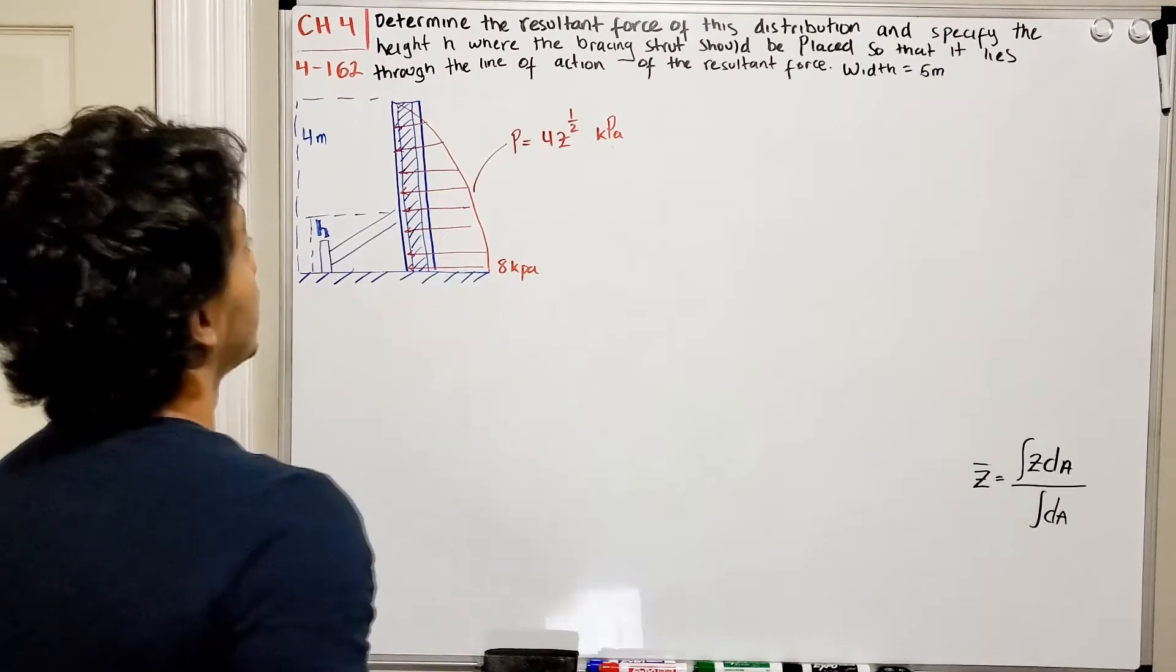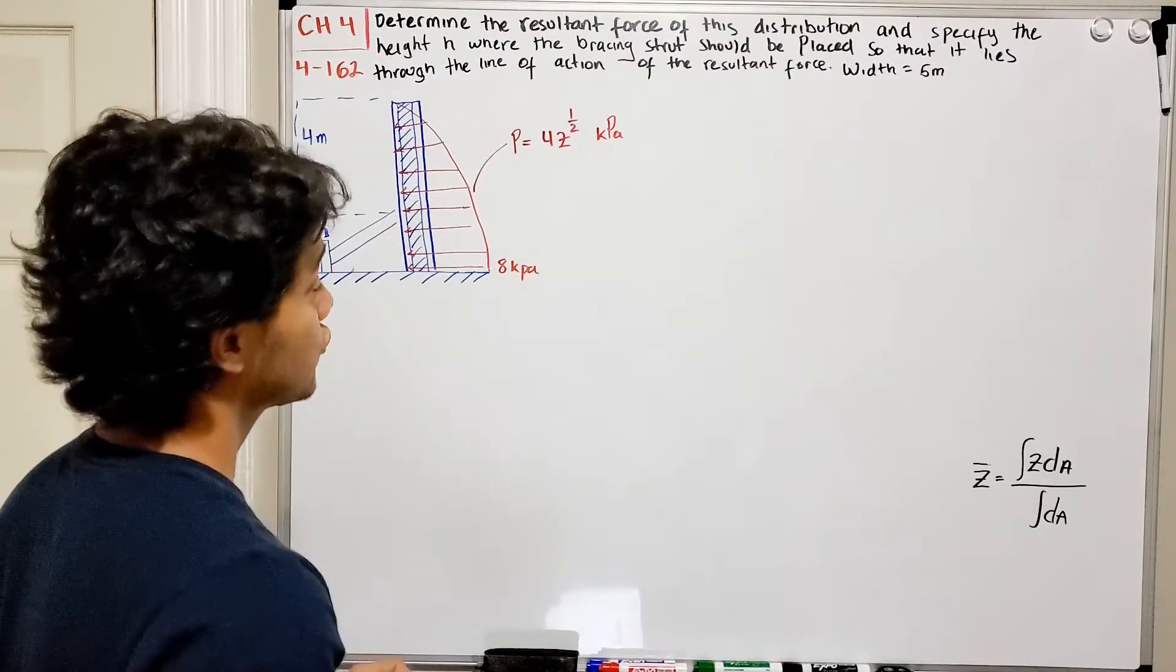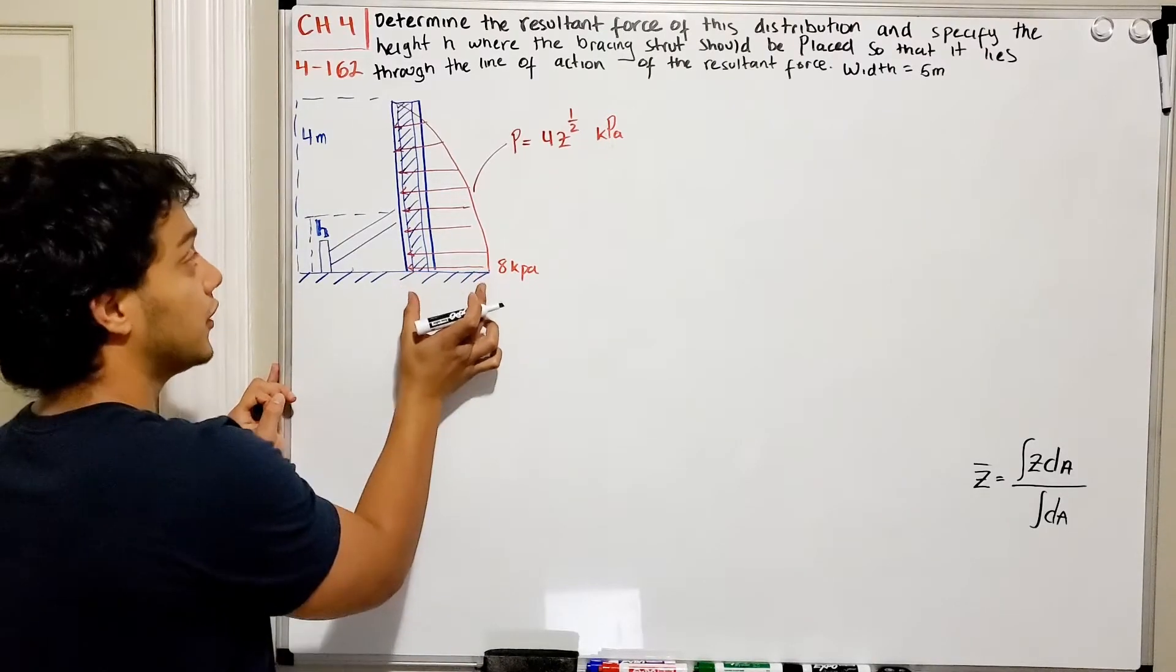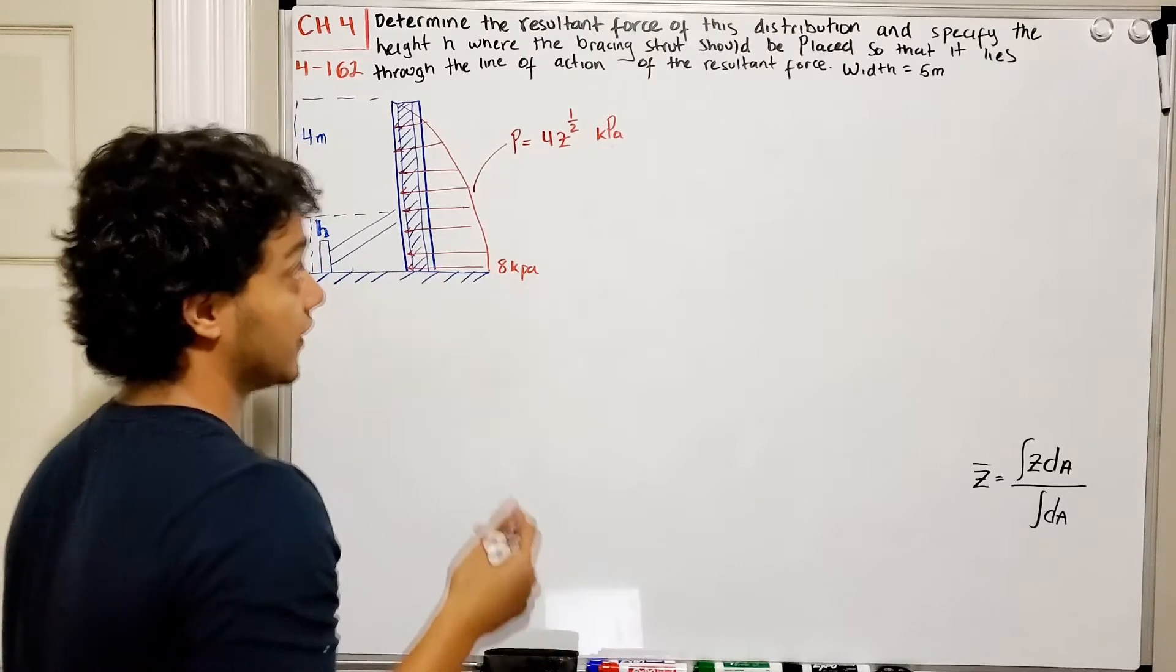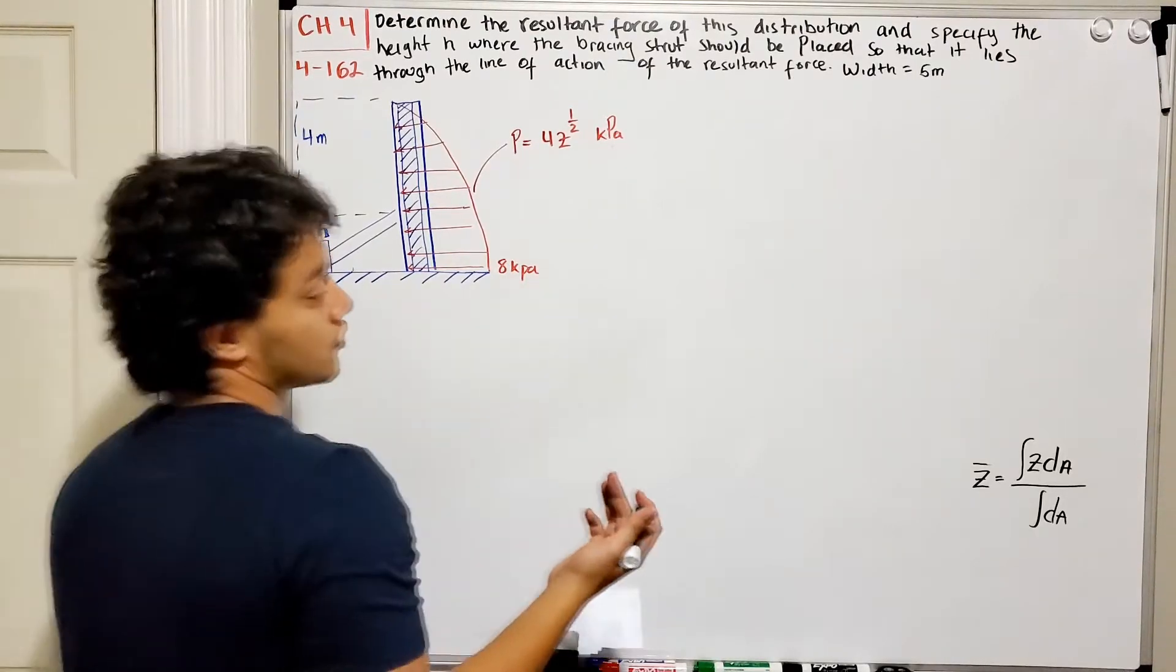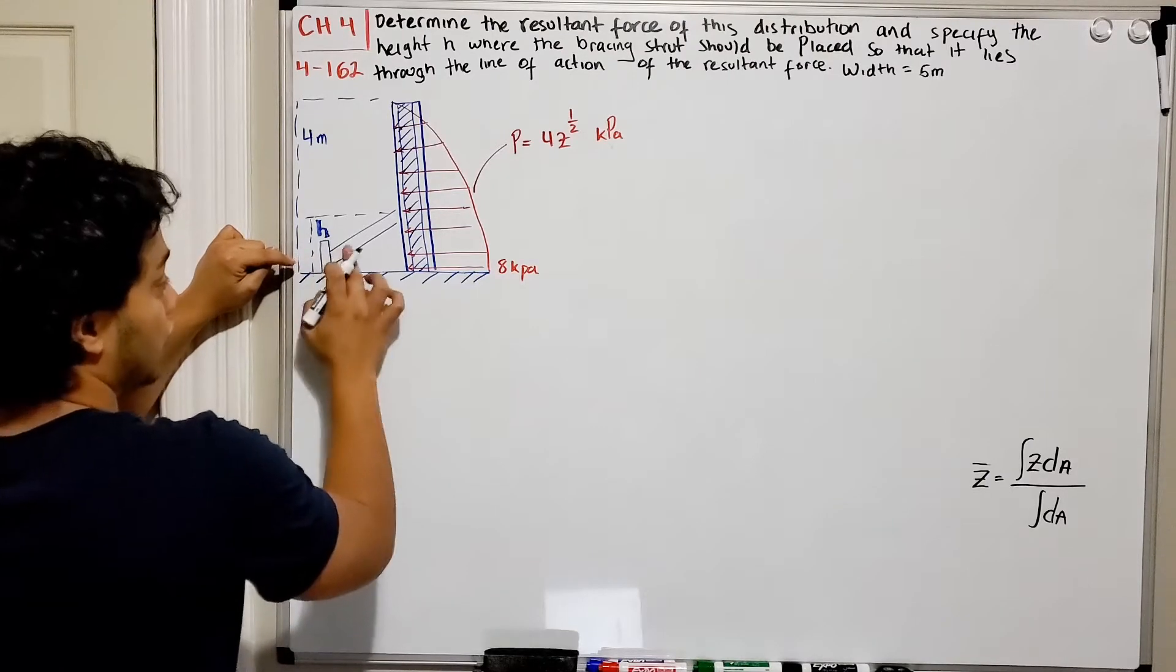So they are telling us that they want us to find the resultant force. We know that we have a distributed load, so we need to find the area of this guy and also where it is located, so that way we know where we need to place this bracing strut.